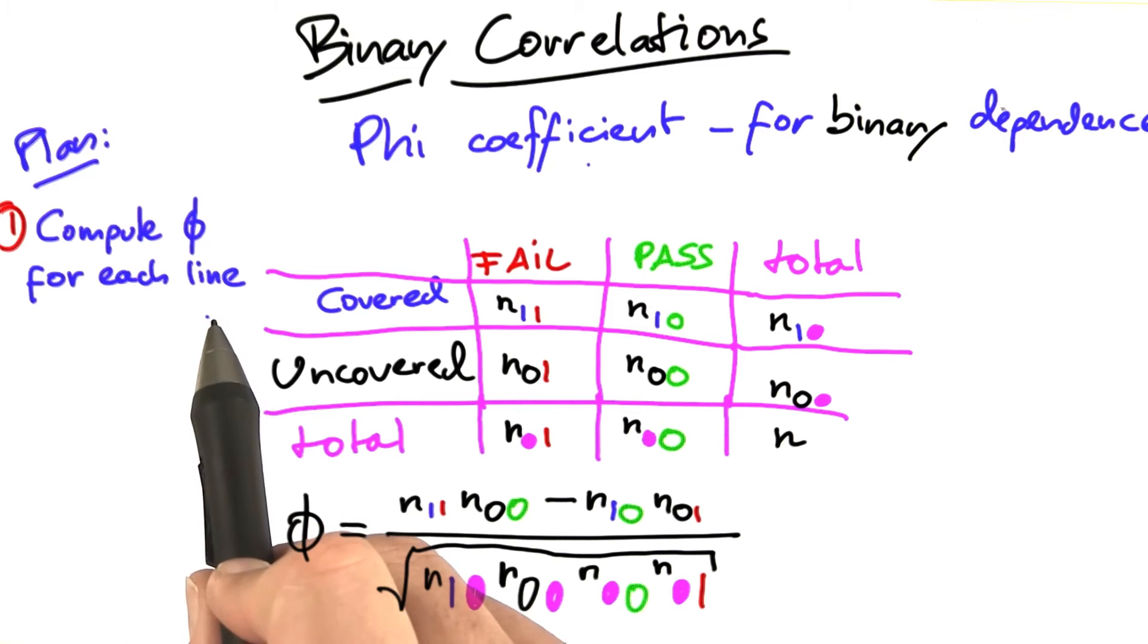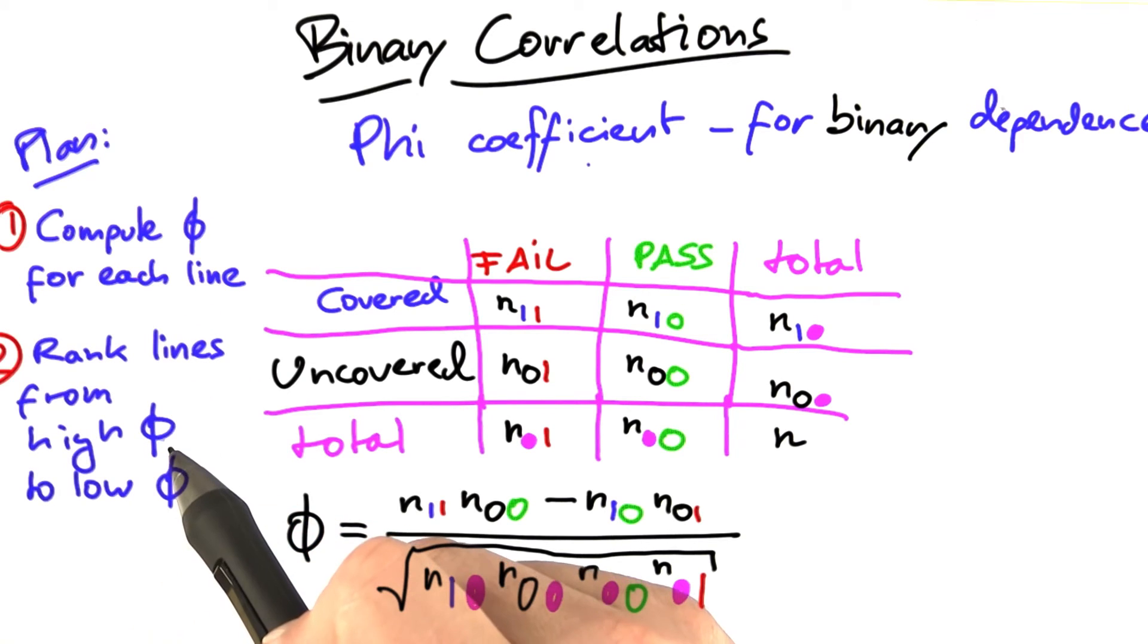Our plan now is, we compute the phi correlation for each line, and then we rank the lines from high correlation to low correlation. And we start, of course, with the strongest correlation.